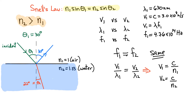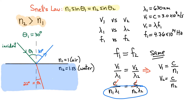I can simplify this expression: instead of V1, write that as c divided by N1 over lambda 1, and this equals c divided by N2 times lambda 2. The c's cancel on both sides, and you're left with an important equation: N1 times lambda 1 must equal N2 times lambda 2. This tells us quite a bit about what's going on — the larger the index, the smaller the wavelength.